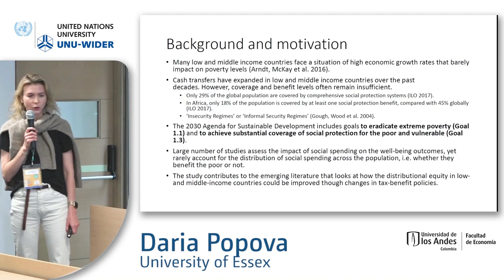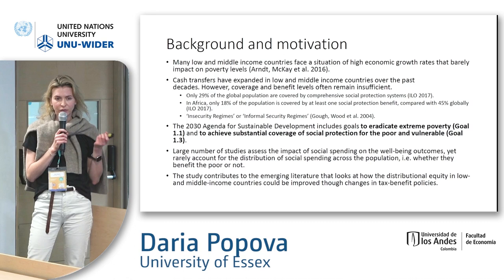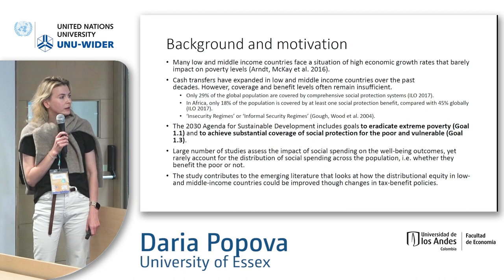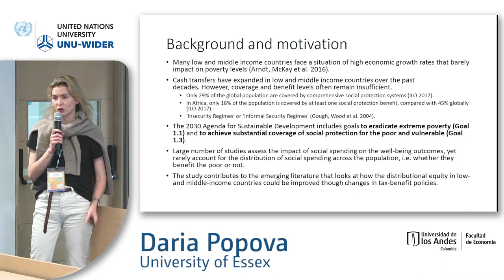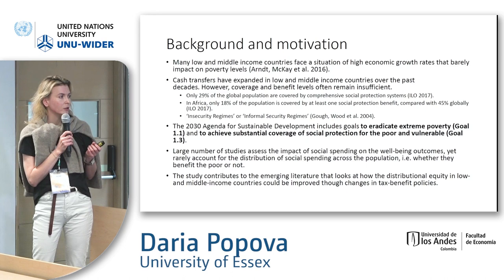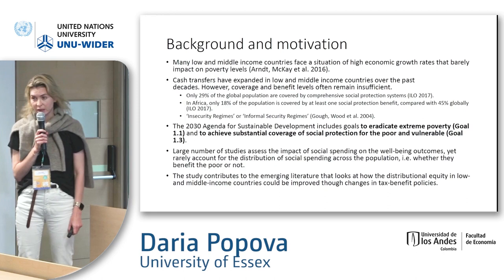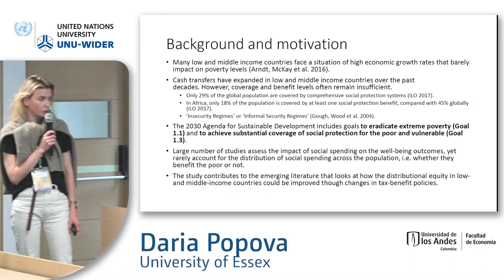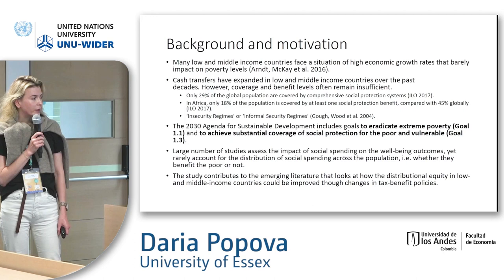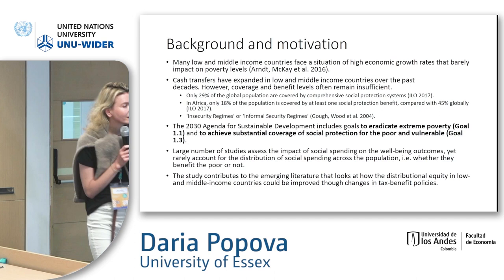A huge problem is that in low and middle income countries they typically have higher growth rates than advanced countries in Europe, but these growth rates barely affect poverty levels and the issue lies in the lack of social protection. Although cash transfers have expanded over the past decades, coverage and benefit levels are modest and insufficient. According to ILO data, only 18% of the population in Africa is covered by at least one social protection benefit, compared to 40-45% globally.